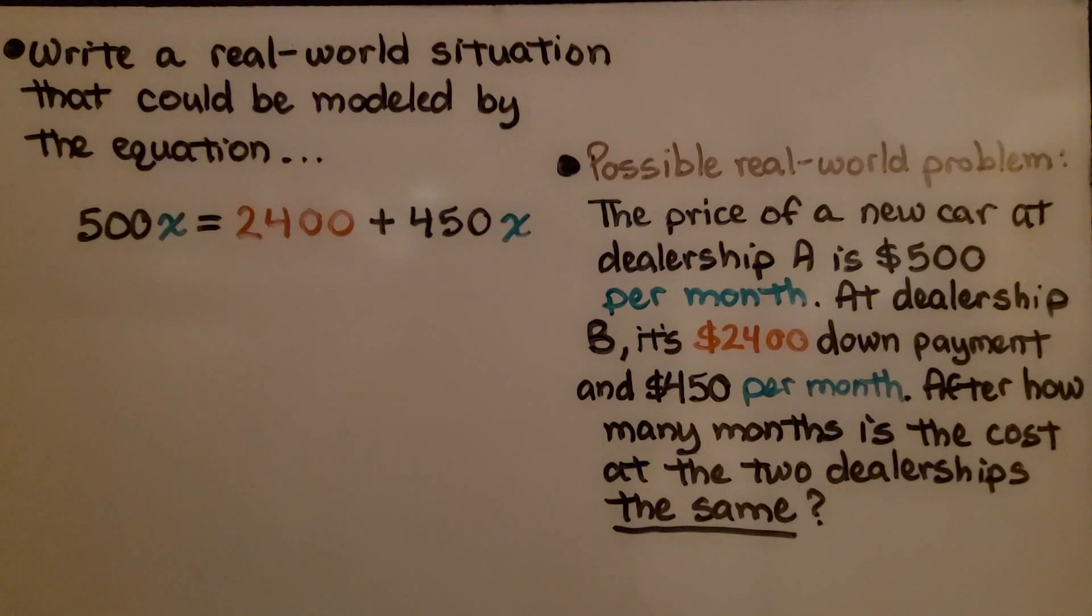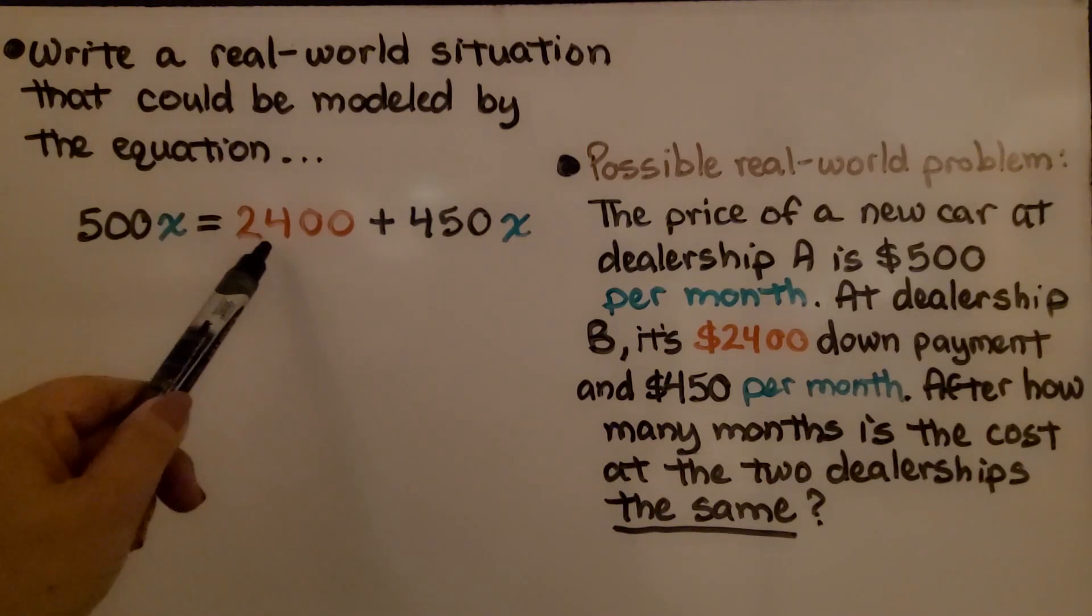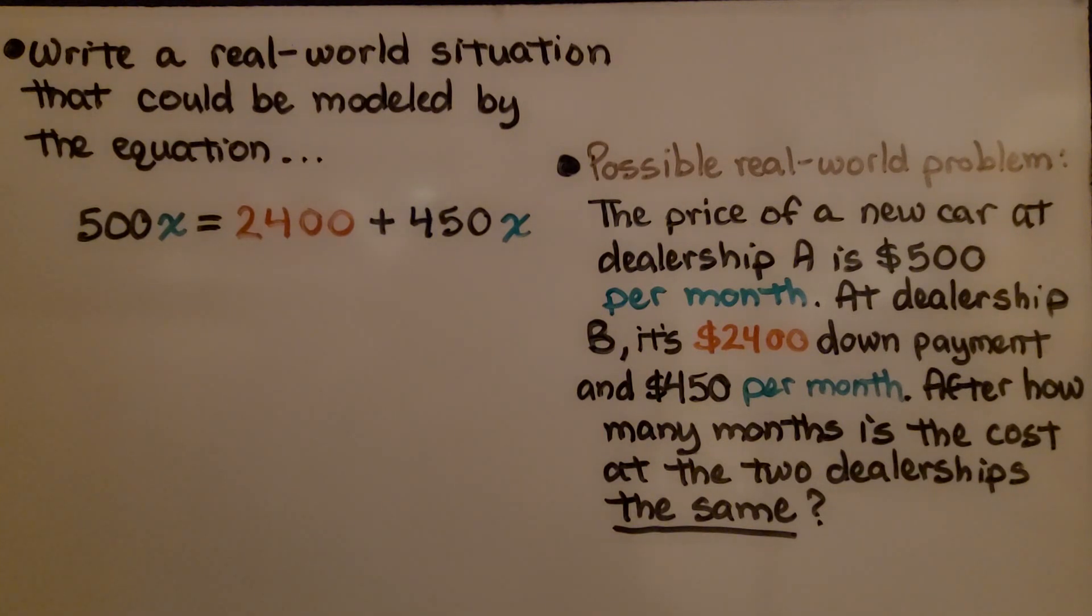A possible real-world problem that I came up with is the price of a new car at dealership A is $500 per month. And dealership B, it's $2,400 down payment and $450 per month. After how many months is the cost of the two dealerships the same? So again, do you notice that I am writing in my word problem that I'm comparing the two dealerships, and I want to know after what time increment will the cost be the same?